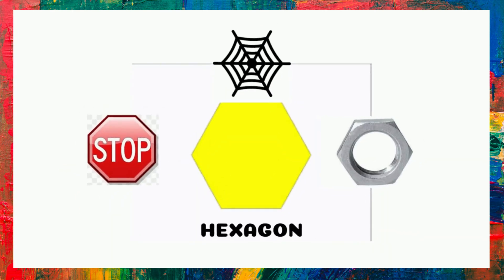What is the name of this shape? Hexagon. It's a hexagon. Examples of hexagon are signage, spiderweb, bolt.